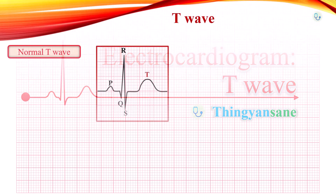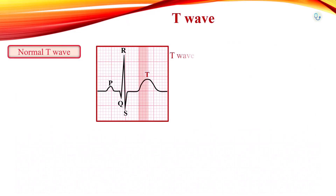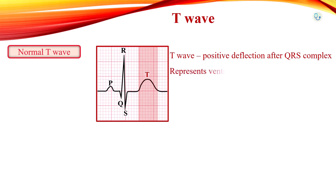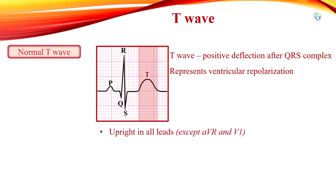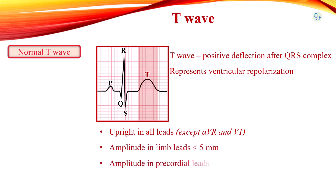The T-wave is the positive deflection after each QRS complex. It represents ventricular repolarization. Characteristics of the normal T-wave include being upright in all leads except AVR and V1, with amplitude less than 5 mm in limb leads and less than 10 mm in precordial leads.